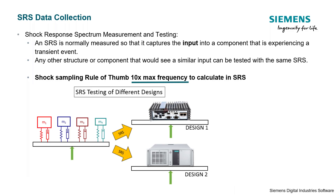That rule of thumb does not really work for a shock response spectrum. As a general rule, you want to take 10 times the max frequency. So if you're taking the SRS out to 1000 Hz, sample at least 10 kilohertz; if out to 10 kilohertz, then at least 100 kilohertz. The reason is this analysis is purely in the time domain. Think about having 10 points per period — the more points per period, the more accurate. The trade-off is file size.